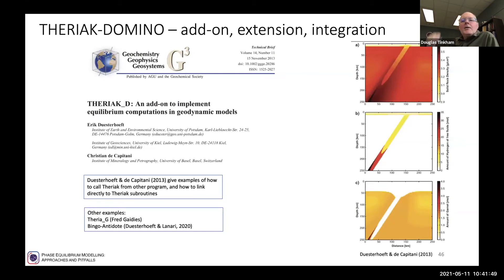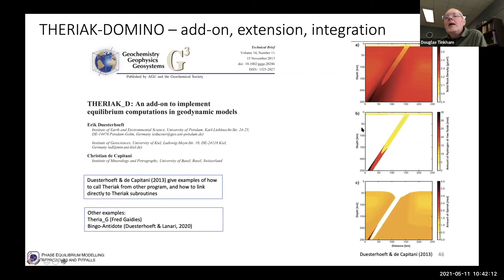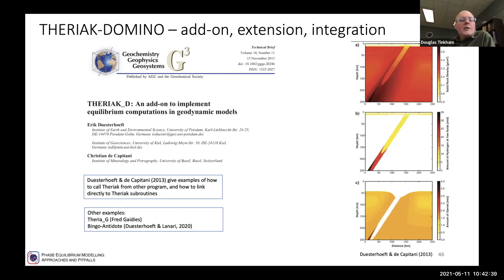Several add-ons and extensions interface with Theriak-Domino. TheriacD, running on a MATLAB script, is an example showing solid rock density, density as a function of depth and temperature for a down-going slab in a subduction zone, the amount of hydrogen in the fluid phase, and the amount of garnet produced. This is very nice because it shows how you can interface software with Theriac but also how you can call Theriac subroutines directly from your own compiled C or C++ program. TheriaG and Bingo Antidote — which Pierre Lanari will discuss — are other add-ons.